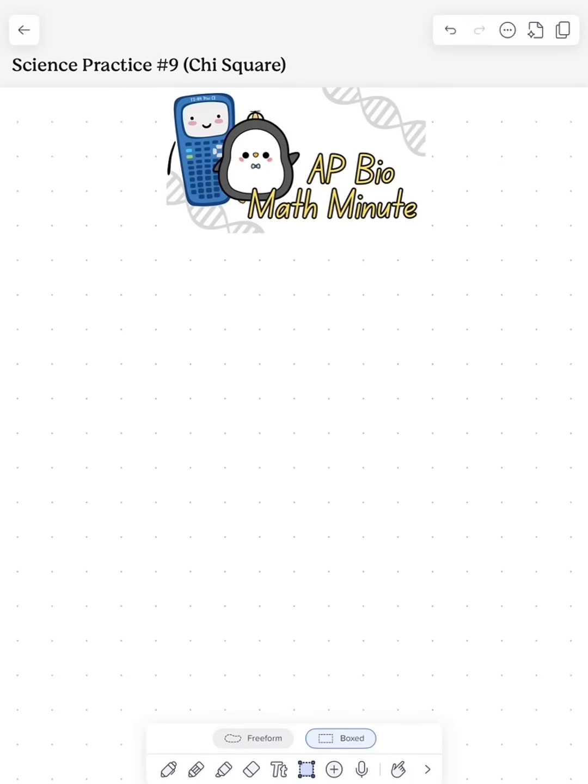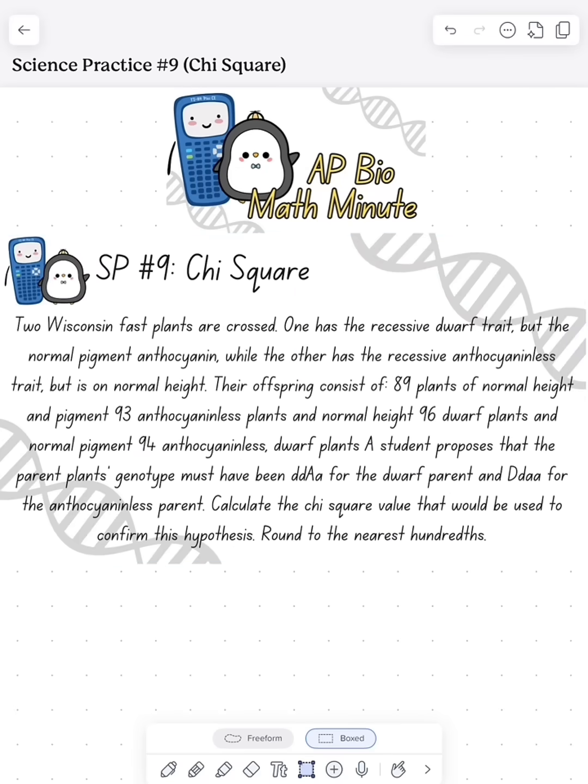What's up, APBioPaymen. Today we're going to do a little APBioMath Minute looking at chi-square. So we have these two different Wisconsin fast plants and we know their phenotype and we have a prediction of what we think their genotype is.